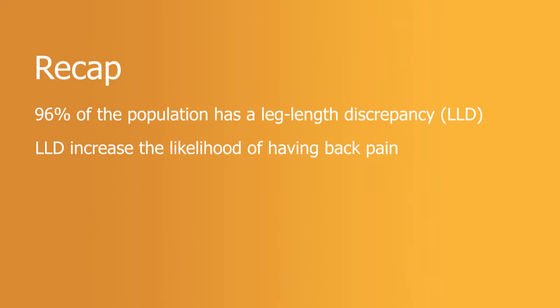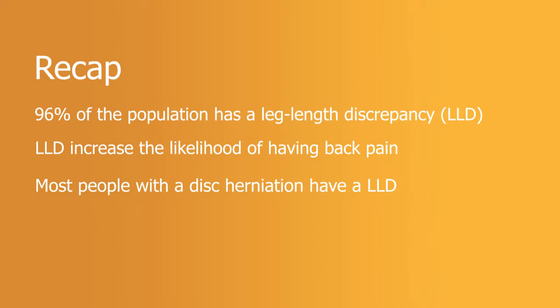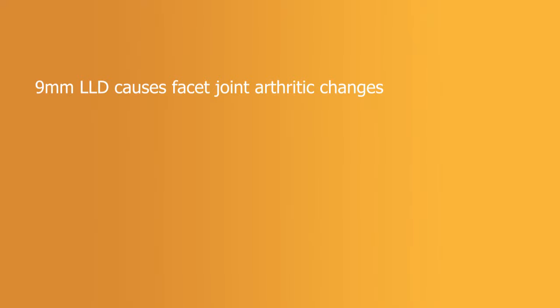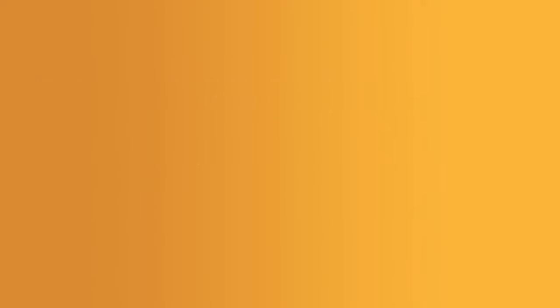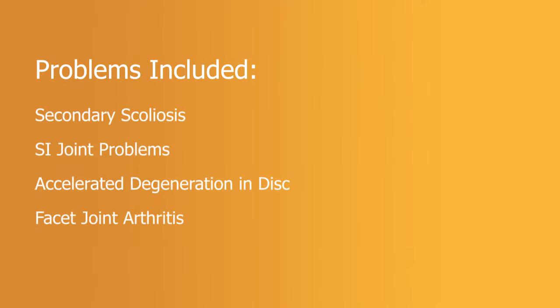Quick recap: the vast majority of people have a leg length discrepancy. If you have one leg shorter than the other, you are much more likely to have low back pain, and the majority of people with a disc herniation also have a leg length discrepancy — they usually get pain on the side of the short leg. The authors noted that nine millimeters or less can lead to facet joint changes and early arthritis. Six millimeters or less can cause pelvic obliquity and secondary scoliosis. And just three millimeters or less can induce postural changes. Key problems include secondary scoliosis, sacroiliac joint issues, accelerated disc degeneration, facet joint arthritis, and perpetuation of scoliosis.